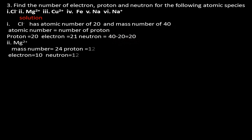Problem 3(ii): For the magnesium ion (Mg²⁺), mass number = 24 and proton number = 12 (from the periodic table). Since magnesium is a cation that lost 2 electrons, electron count = 12 − 2 = 10. Neutron number = mass number − proton number = 24 − 12 = 12 neutrons.